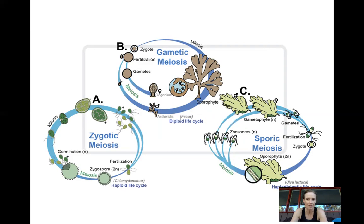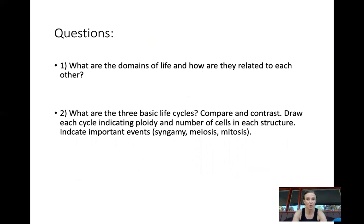We're going to see all three types of meiosis represented in eukaryotes depending on where these creatures live. Here are two questions that would be good for maybe the final exam: What are the domains of life and how are they related to each other? And: What are the three basic life cycles — compare and contrast them, draw each cycle, indicate ploidy and number of cells in each structure, and indicate important events: syngamy, meiosis, mitosis. That's it for our very first lecture. Thanks, I'll talk to you soon!